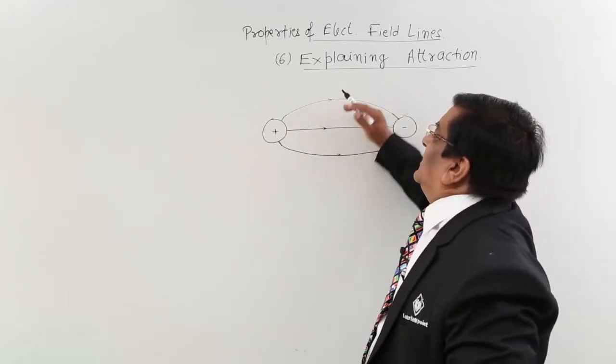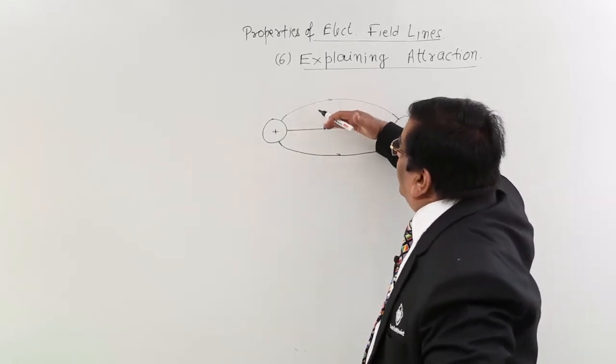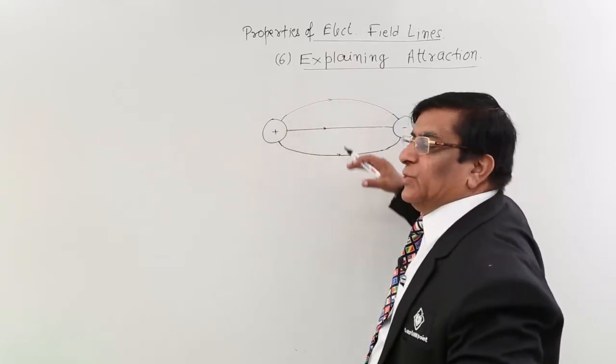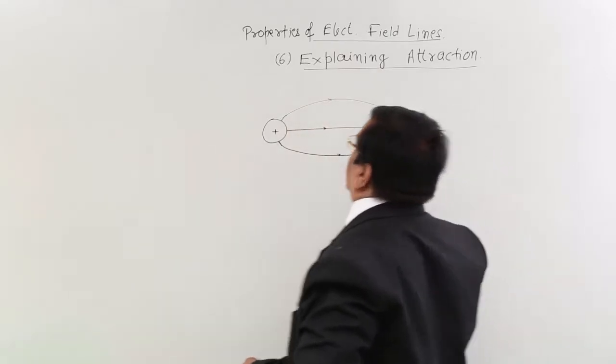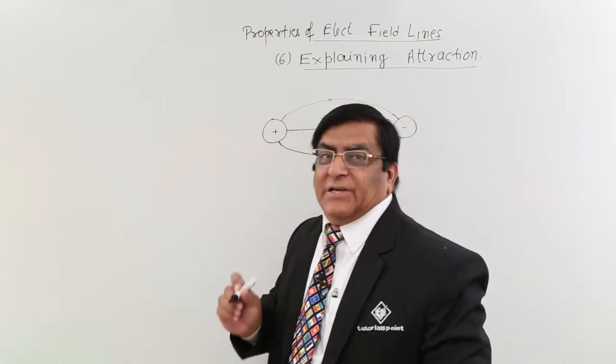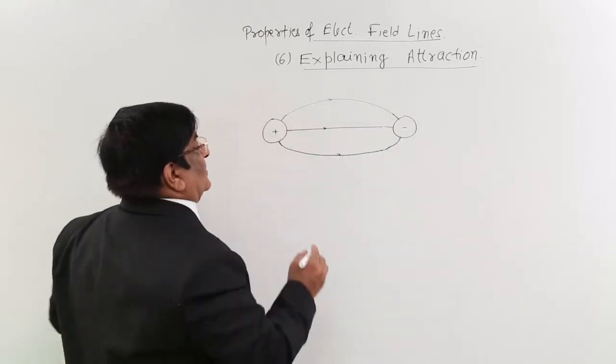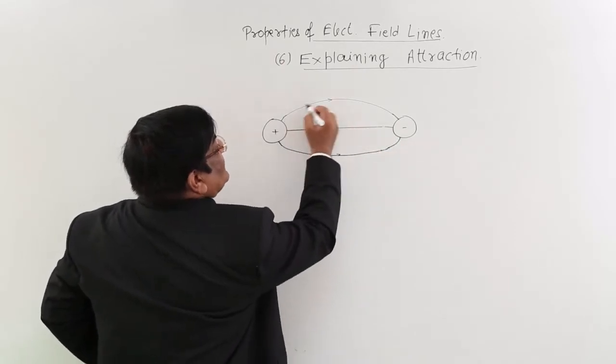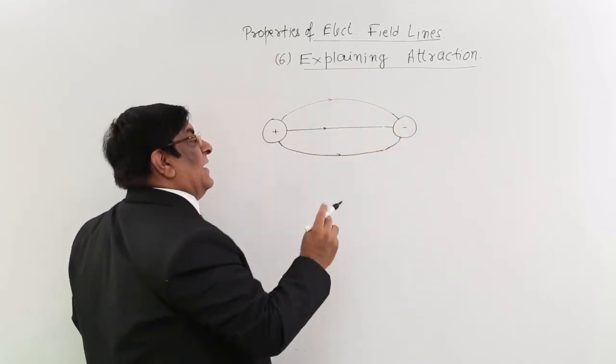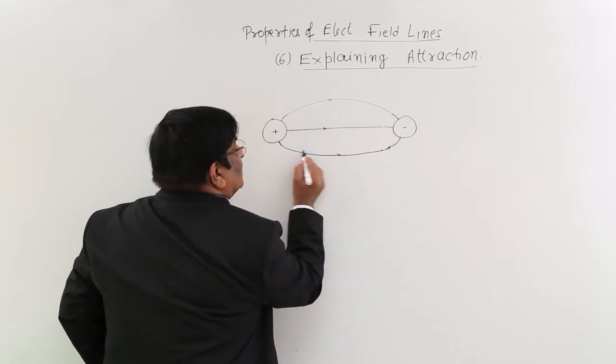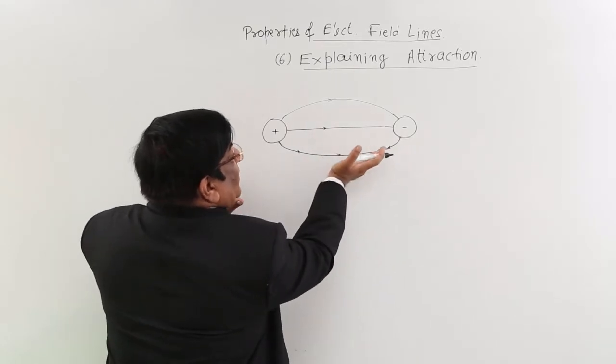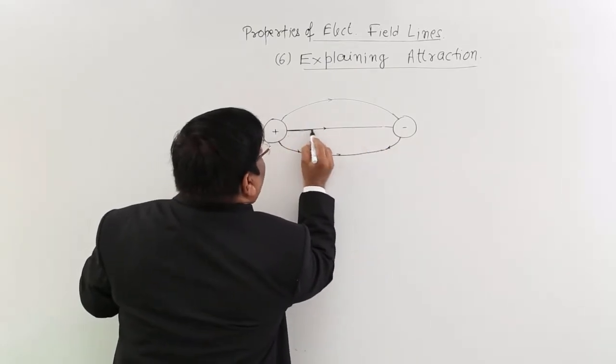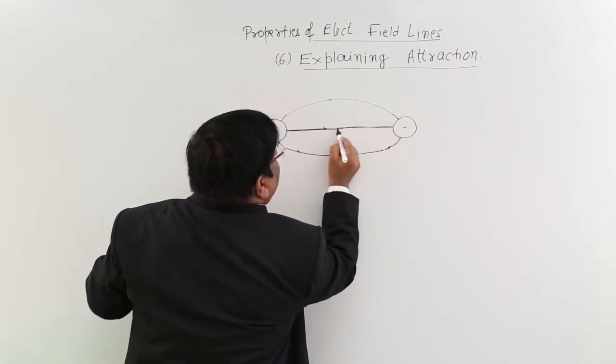Now what is its tendency? Its tendency is to come back to this shape. So when stretched, it always experiences a force to come back to its original length. This is always under tension. And what is the tension? The tension is that it wants to become smaller. Finally it wants to come to the smallest length like this.